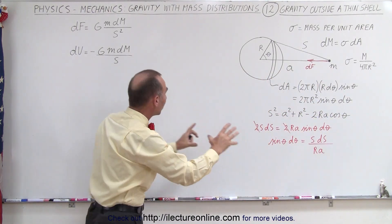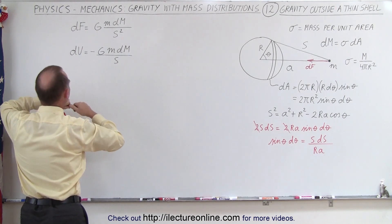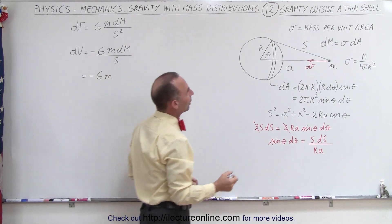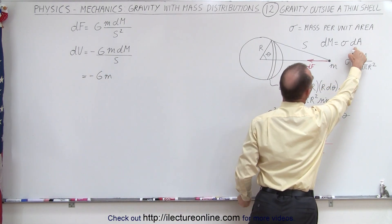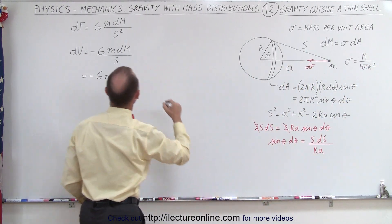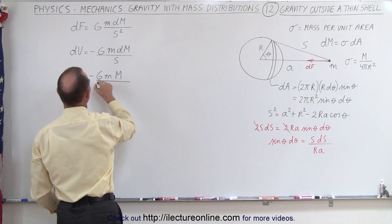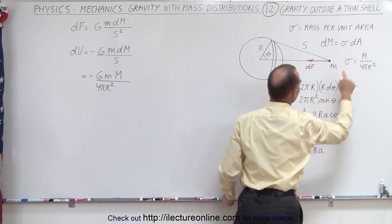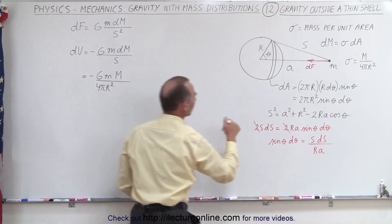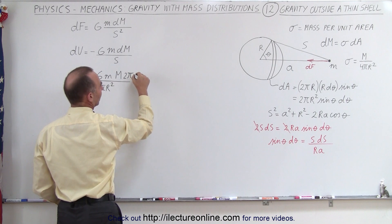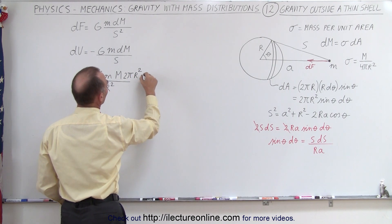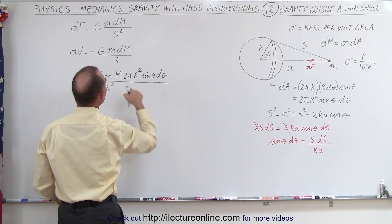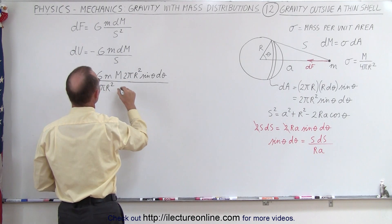We're now ready to plug everything into the potential energy equation. This equals −G times the small mass, where dm = σ dA. Substituting σ = M / (4πr²) and dA = 2πr² sinθ dθ, we get dU = −G·m·M·sinθ dθ / (2·s).